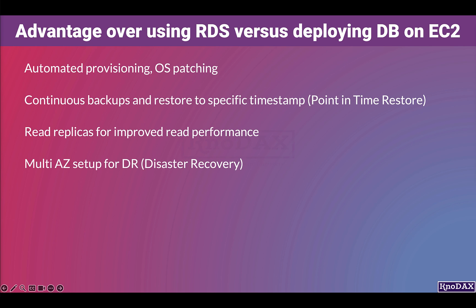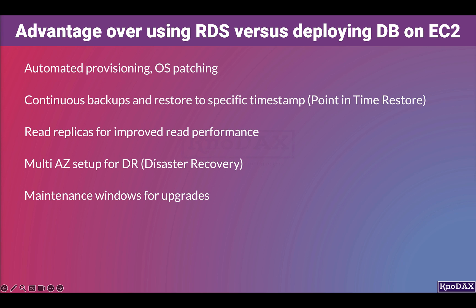RDS provides a multi-AZ feature to eliminate a single point of failure. When you enable multi-AZ, your database will be deployed to more than one availability zone. Thus, if something happens to one availability zone, your database in the other availability zone will still be available.